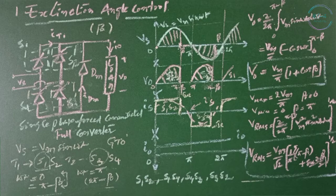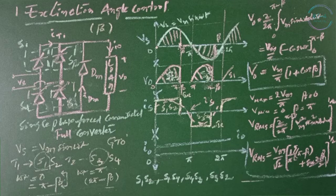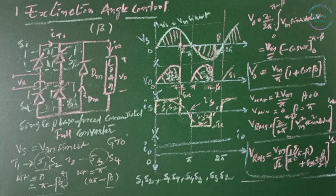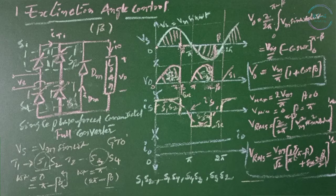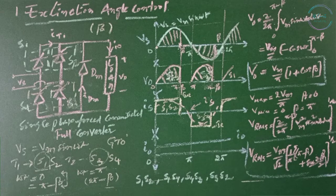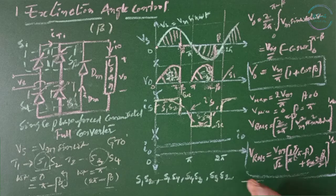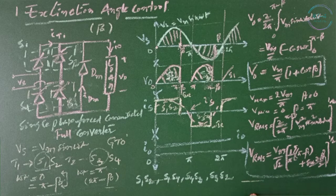When you compare the performance of extinction angle control with phase angle control, performance is the same for semi and full converters with extinction angle and phase angle control, except the power factor is leading in extinction control, whereas power factor is lagging in phase angle control. The output voltage, average output voltage, and average RMS voltage are the same.